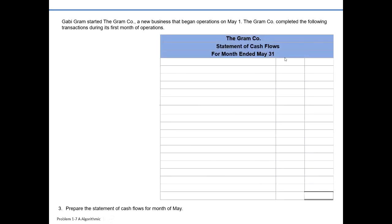Our statement of cash flow has something in common with our income statement and statement of retained earnings, in that it also covers a period of time. For Graham Company, that's for the month ended May 31st. The goal is to explain the change in cash from the beginning of that period — May 1st — to the end of that period, May 31st.